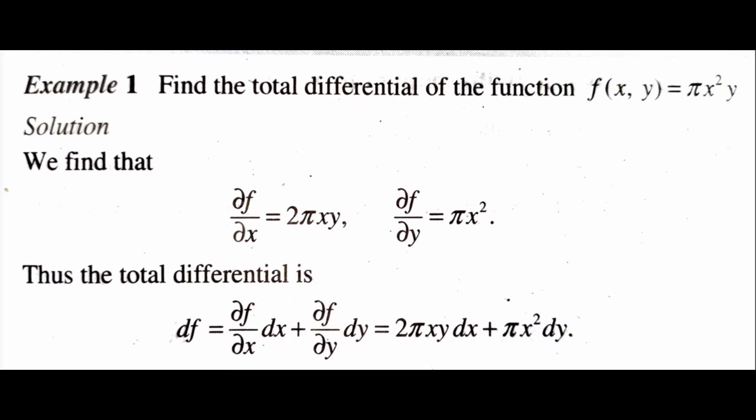Similarly, ∂f/∂y — differentiating with respect to y, keeping x constant — gives ∂f/∂y = πx². Thus the total differential is df = (∂f/∂x)dx + (∂f/∂y)dy = 2πxy·dx + πx²·dy. That is our final answer.